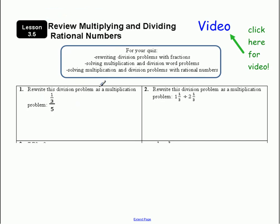So I have to rewrite this division problem as a multiplication problem. Right now it doesn't even look like a division problem, but if you notice there's a very dark fraction bar right here, and this top one's a little bit skinnier. So it's gonna be one-third divided by five.